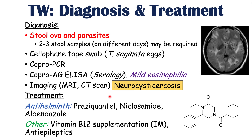Anti-epileptics or anti-seizure medication can be important in some cases of neurocysticercosis, which can cause seizures. For the diagnosis of tapeworm infections, the most commonly used is stool ova and parasites — best done with two to three stool samples on different days. Imaging is used for neurocysticercosis. Praziquantel and albendazole together are often the treatment for neurocysticercosis, while vitamin B12 supplementation is important for Diphyllobothrium latum infection.